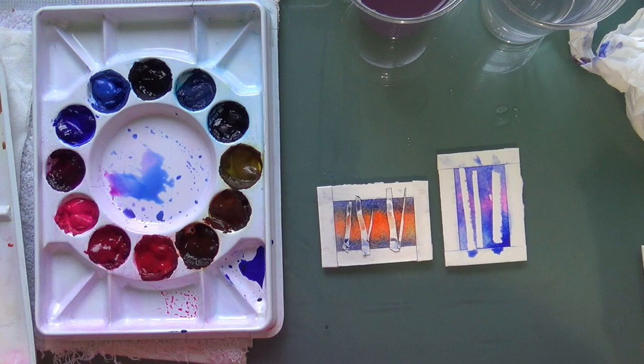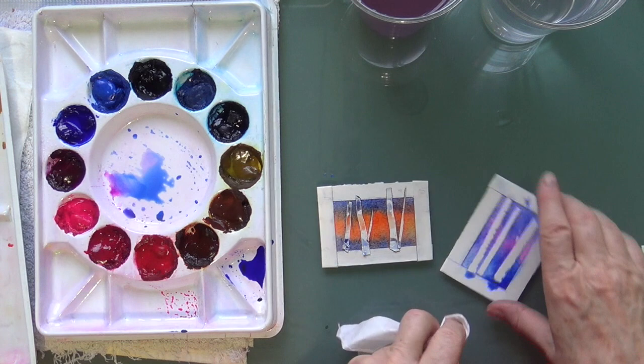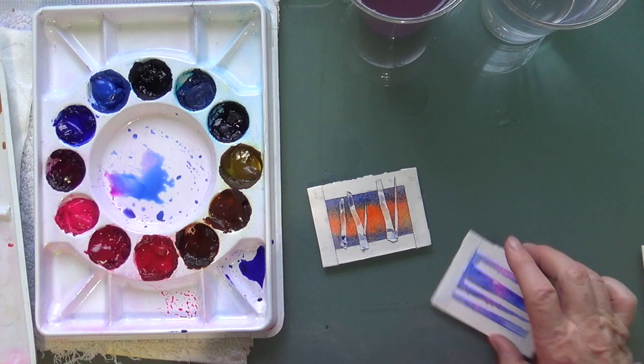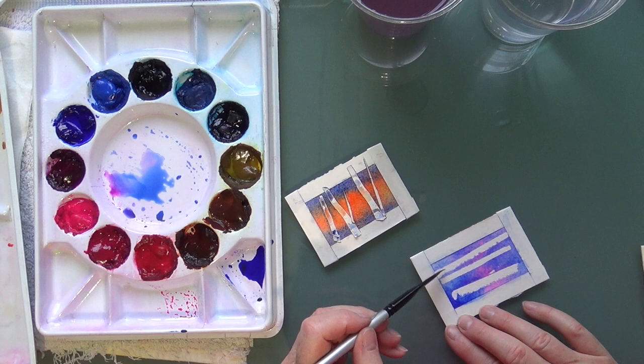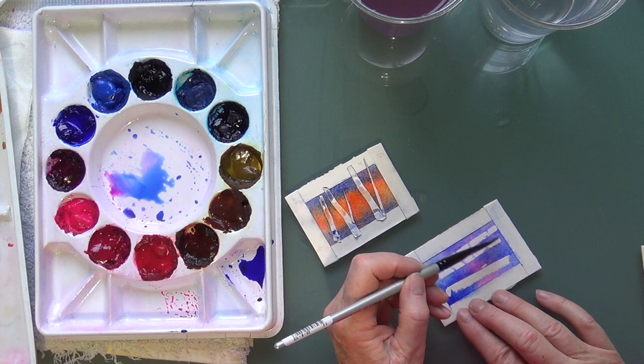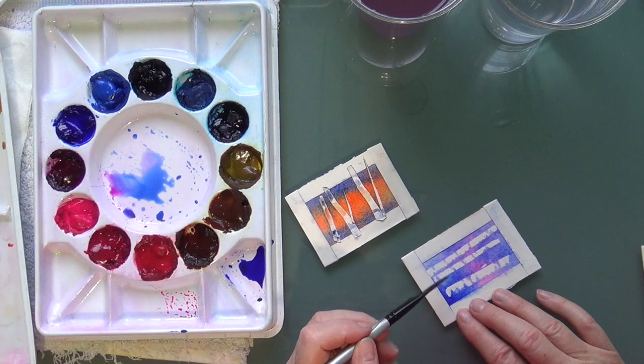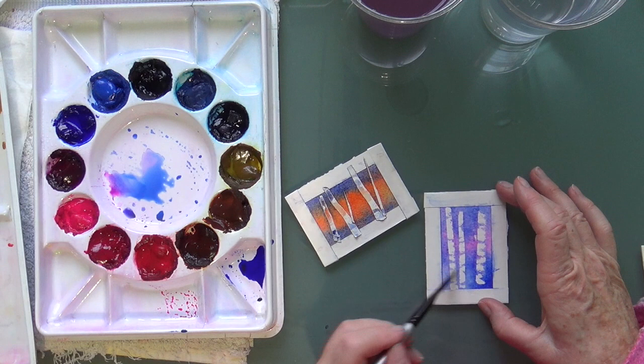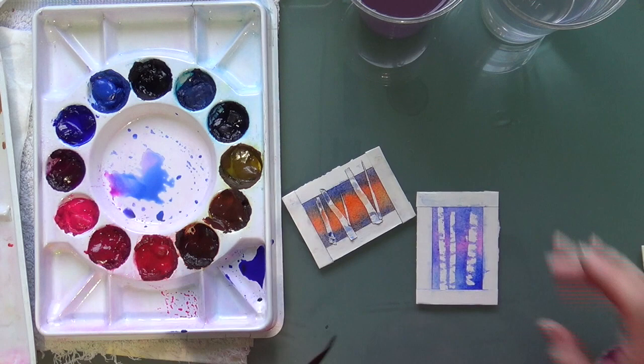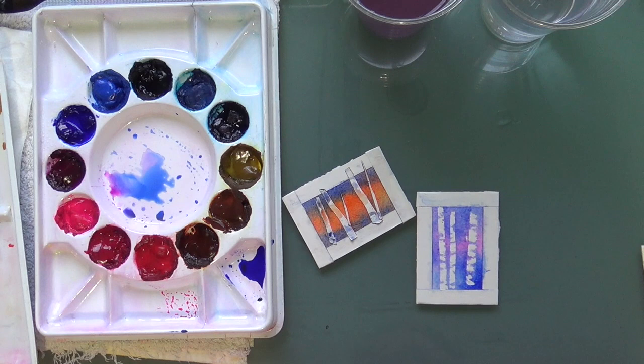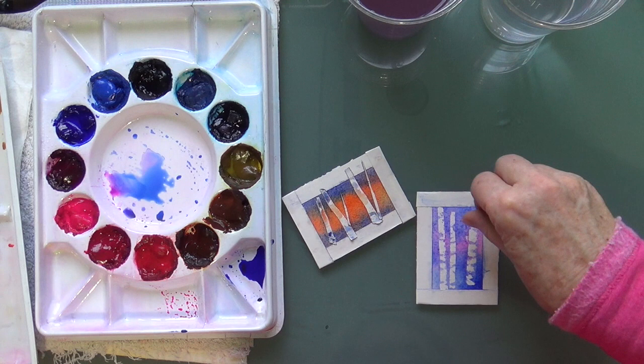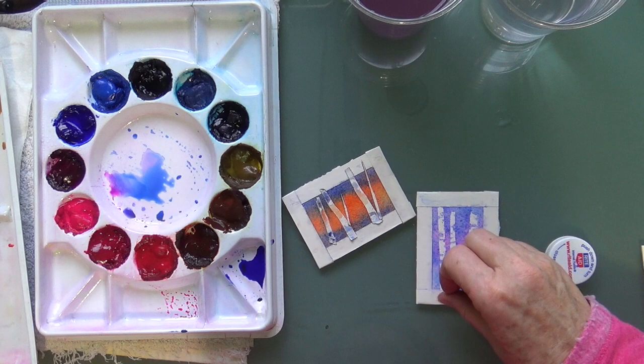And then what I'm going to do is I'm going to take a damp brush and I'm just going to go over like this to create, so I'm kind of integrating the trunks into the background so that they don't look so cut out. You see that? Get a little bit of that color in. And I'm going to throw a little salt on it, mainly up here.